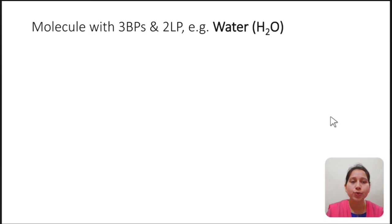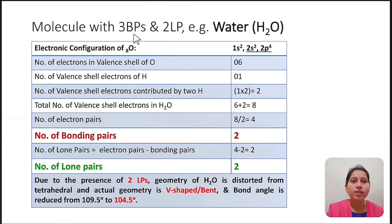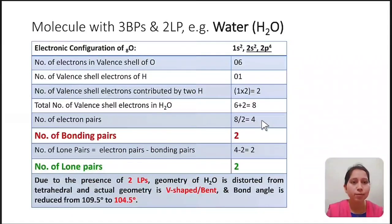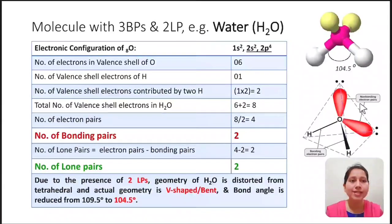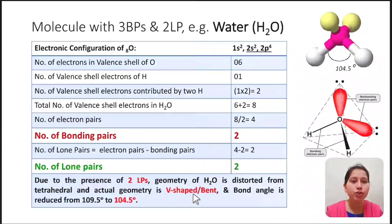Next: water molecule (H₂O), with two bond pairs and two lone pairs. Central atom is oxygen with six valence electrons; two hydrogens contribute two electrons. Total valence shell electrons = 8, giving four electron pairs: two bonding pairs and two lone pairs. Due to the presence of two lone pairs, the geometry of water is distorted from tetrahedral and the actual geometry is V-shaped or bent. Because lone pair–lone pair repulsion is maximum, the bond pairs come closer and the bond angle is 104.5°.